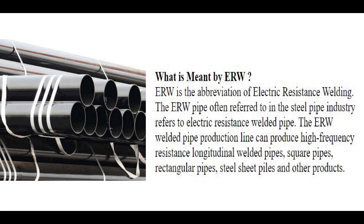What is meant by ERW? ERW is the abbreviation of electric resistance welding. The electric resistance welding pipe, often referred to in the steel pipe industry, refers to electrical resistance weld. The electrical resistance welded pipe production line can produce high frequency resistance longitudinally welded pipes, square pipes, rectangular pipes, steel sheet pipes, and other products.